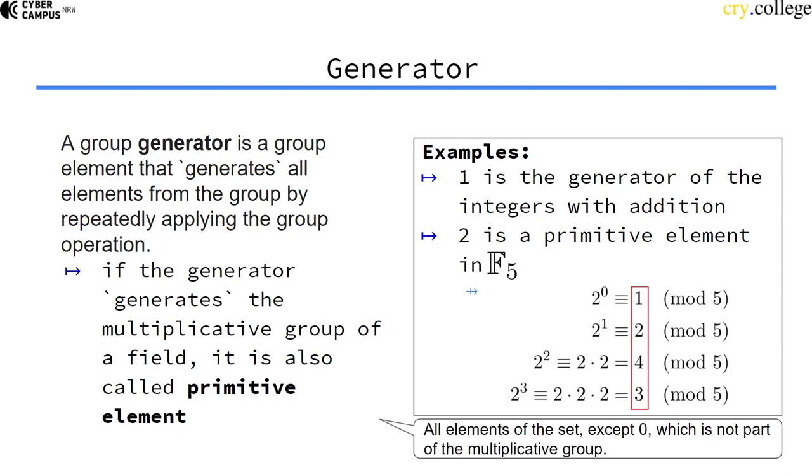So these are all elements of the multiplicative group within the field F5, except for 0, which is not part of the multiplicative group in a finite field, as we have learned, or in a field in general.